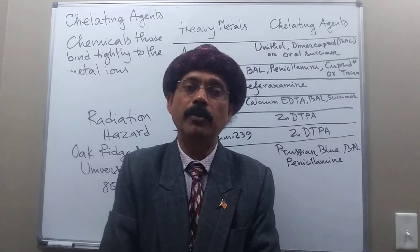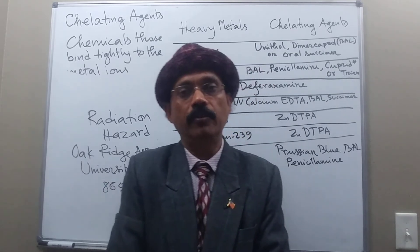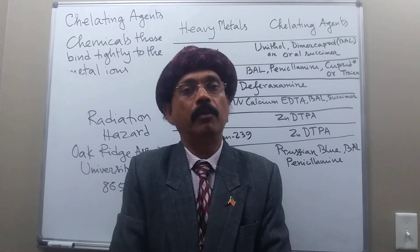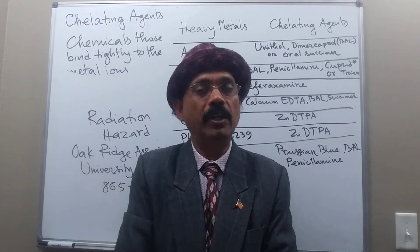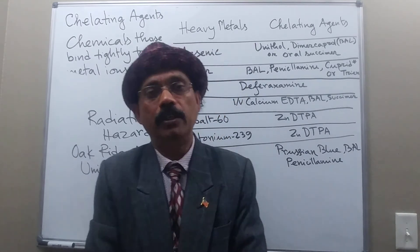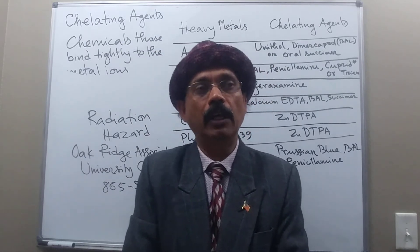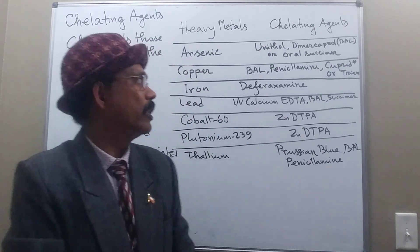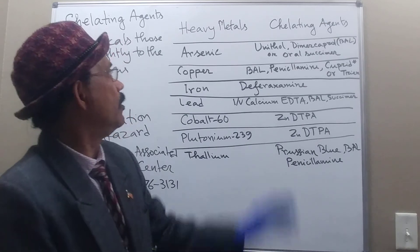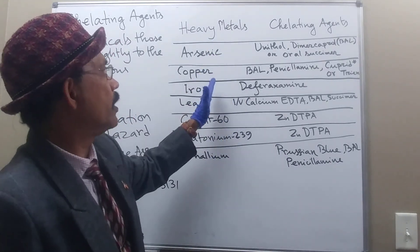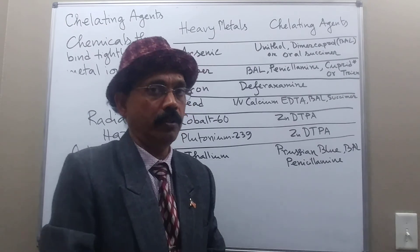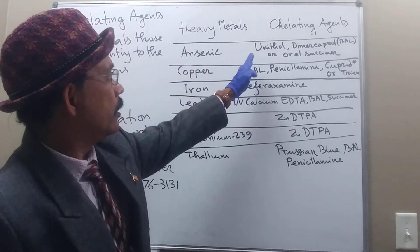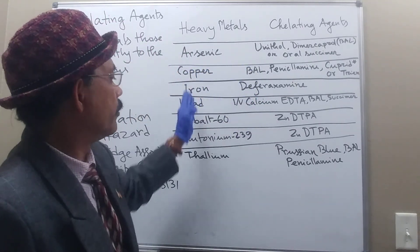Chelating agents should always be used under medical supervision. Other parts of poison management — like decontamination and hydration — should also be carried out along with the chelating agent. There may not be one ideal chelating agent for every heavy metal; it varies from heavy metal to heavy metal and also depends on the patient's age and condition.